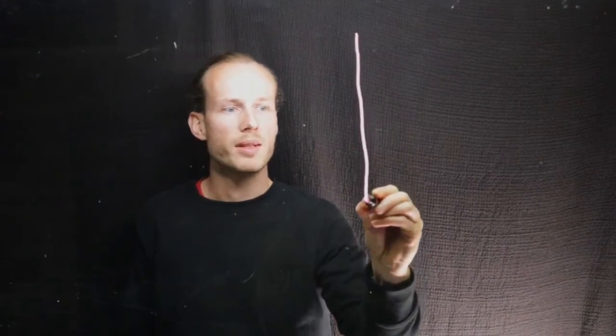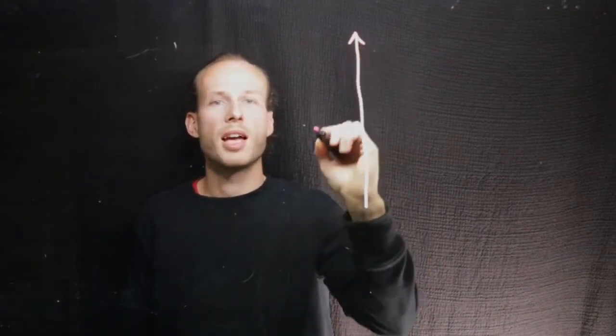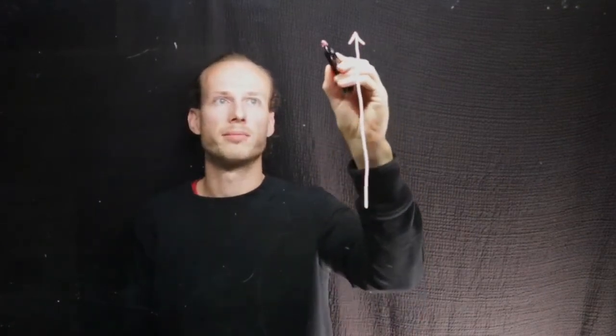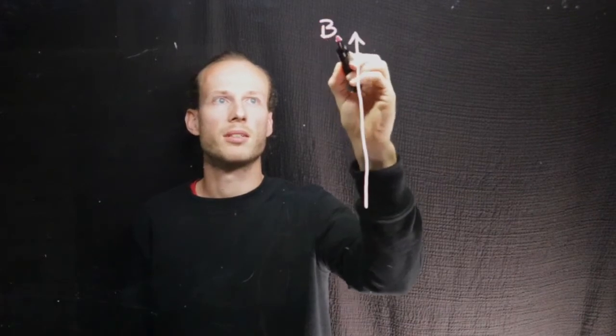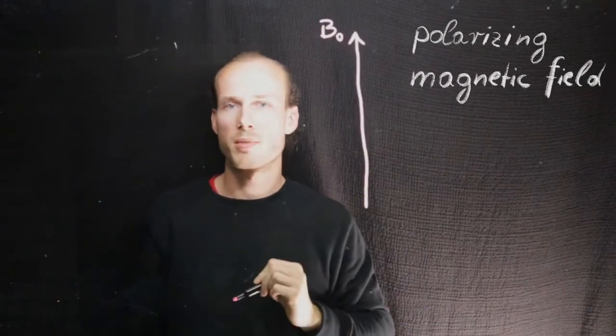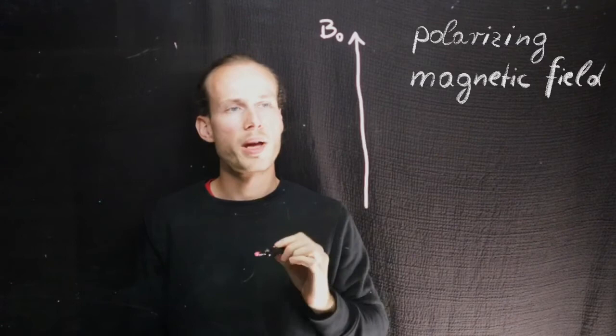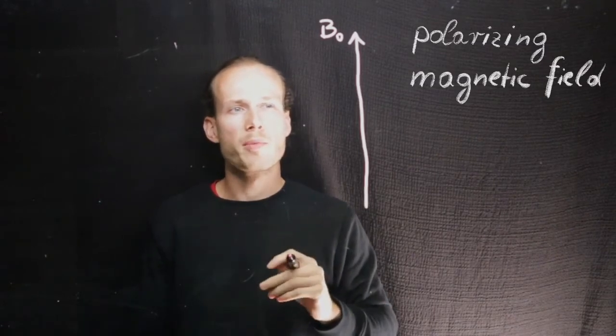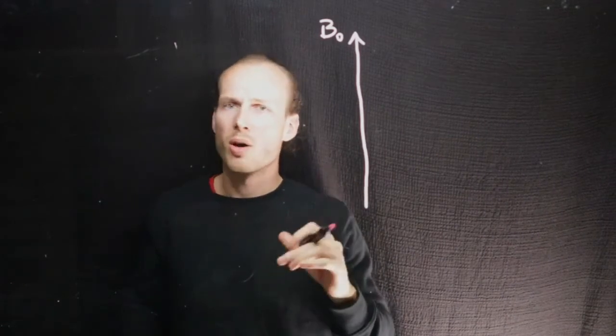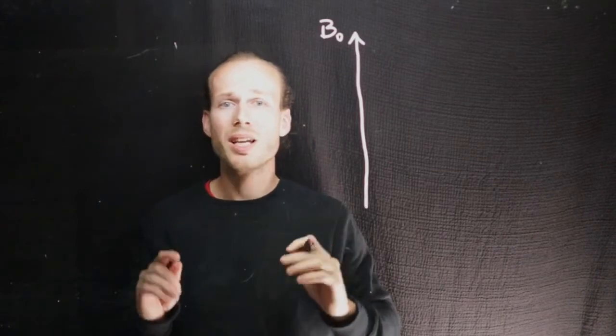So what you will often see in a textbook is a magnetic field in the z-direction shown as an arrow. We will do that here as well. And it is often called B0. This is the polarizing magnetic field.